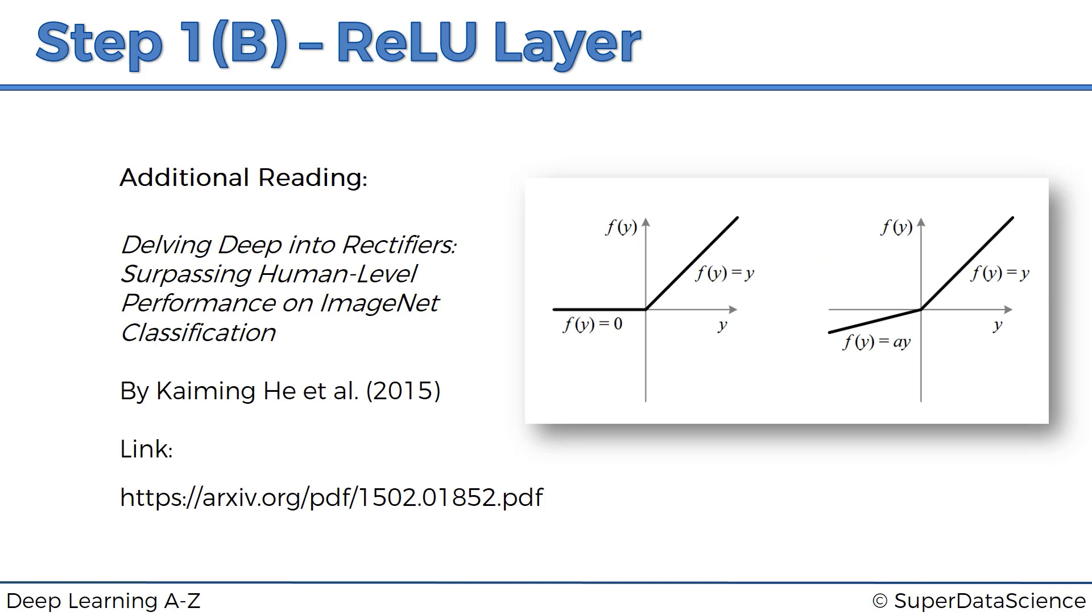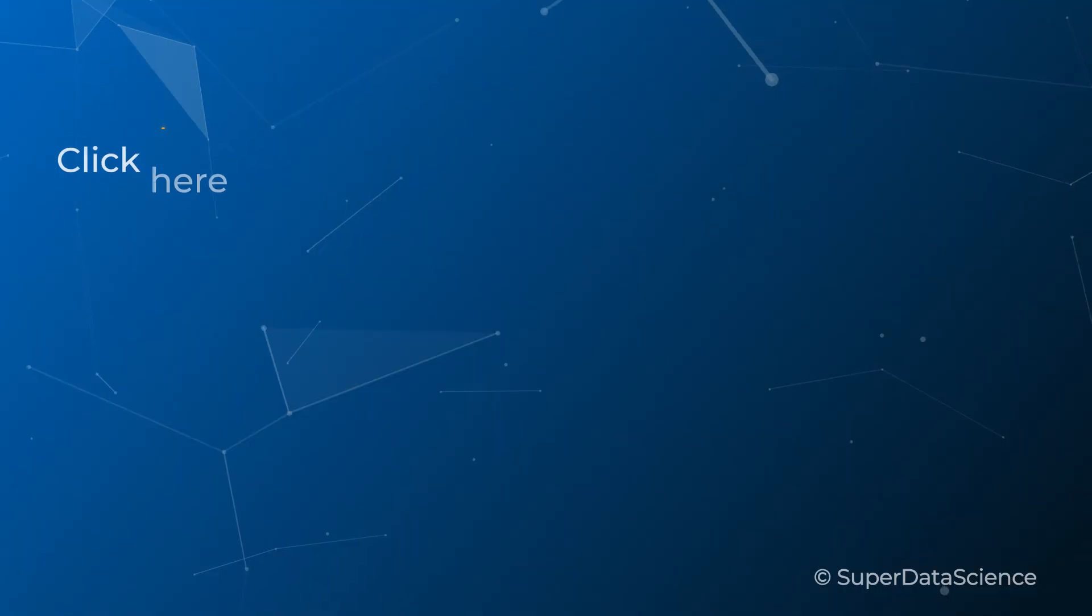And if you really want to dig in and explore some cool stuff here, then there's another paper that you might be interested in. It's called Delving Deep into Rectifier, Surpassing Human-Level Performance on Image and Net Classification. And here, the authors, Kaiming He and others from Microsoft Research, they propose a different type of rectified linear unit function. They propose the parametric rectified linear unit function, which you see here on the right. And they argue that it delivers better results without sacrificing performance. So interesting read if you'd like to get a bit more into this topic.